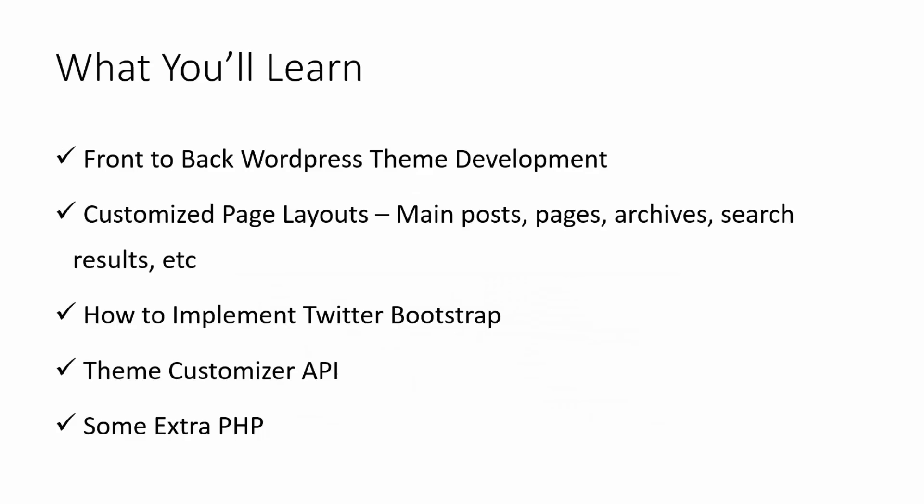Here's a brief summary of what you'll learn in this series. You'll learn how to build a WordPress theme front to back and how to customize certain areas such as the main post loop, pages, archived posts, search results, comments, and more. You'll also learn how to implement the Twitter Bootstrap framework into WordPress, including the NavWalker class which will allow us to have drop-down menus.